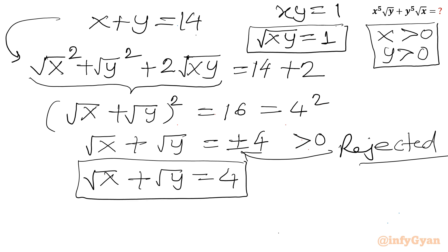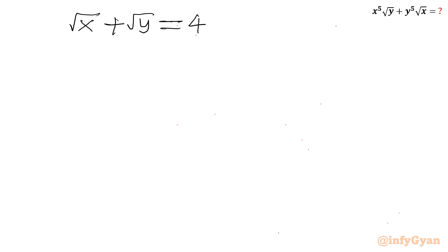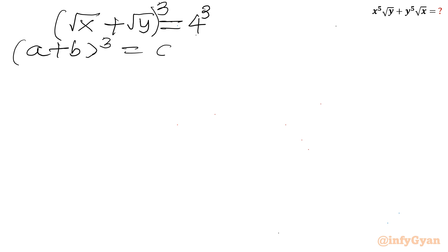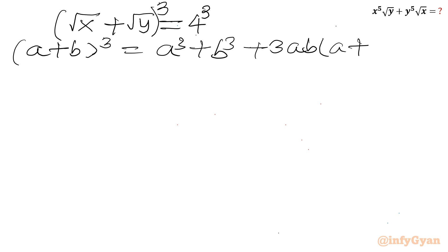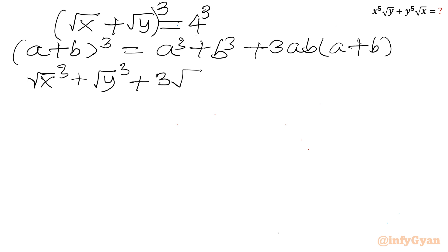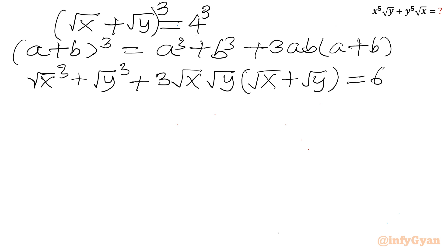Now I will consider cubing of this equation. Root x plus root y equals 4, so I will write power 3 on both sides. Using the a plus b whole cube identity: it equals a cubed plus b cubed plus 3ab times bracket a plus b. So I can write root x whole cube plus root y whole cube plus 3 times root x times root y in bracket root x plus root y, and RHS will be 4 cubed, which is 64.